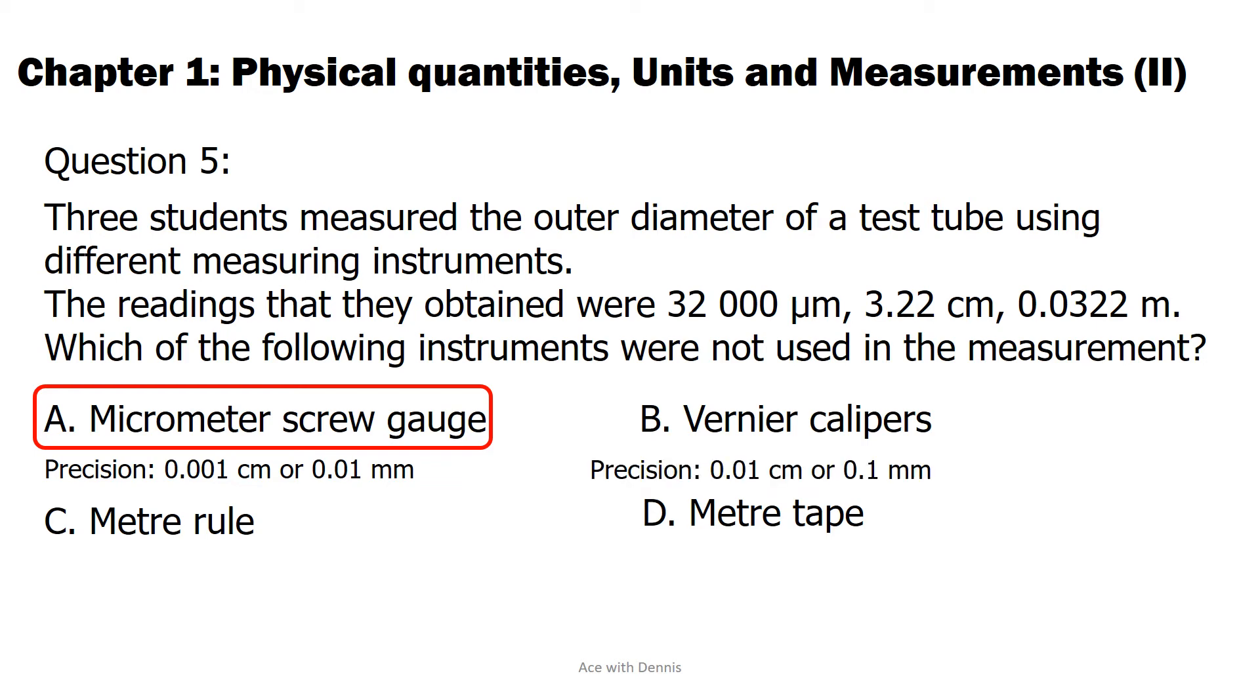The precision of vernier calipers is 0.01 centimeters or 0.1 millimeters. 3.22 centimeters and 0.0322 meters or equivalent of 3.22 centimeters are measured by this instrument. The precision of meter rule and meter tape are 0.1 centimeters or 1 millimeter. 32,000 micrometers or 32 millimeters is measured by these instruments.